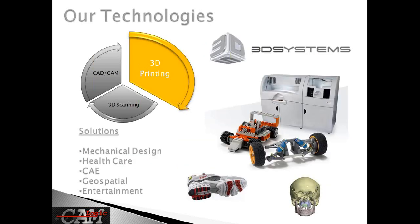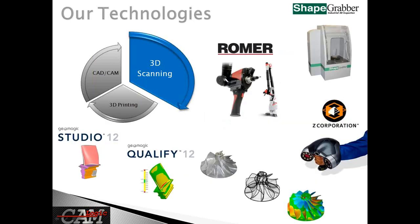We also provide a complete array of 3D printing hardware and service solutions including the 3D Systems ProJet series and the ZPrint series, which is the most affordable color 3D printers on the market. 3D scanning technologies rounds out our trifecta of engineering solutions, from state-of-the-art hardware like Romer Absolute Arm, ShapeGrabber, and ZScanner, coupled with cutting-edge inspection and reverse engineering software from GeoMagic and RapidForm. CamLogic is here to provide a variety of solutions including professional, high-quality, in-house scanning services.